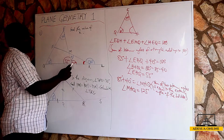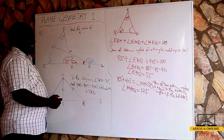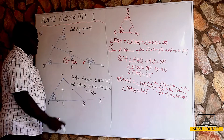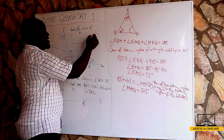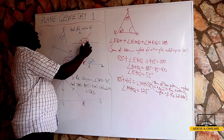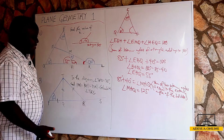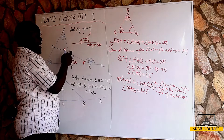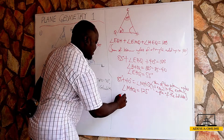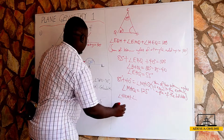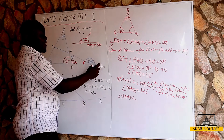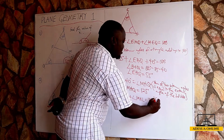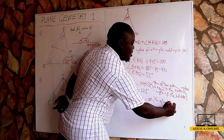To find X, we need another angle. We know that on a straight line, angles add up to 180. So angle HKM plus angle MKL equals 180 degrees — this is the sum of angles on a straight line.